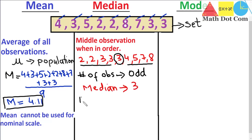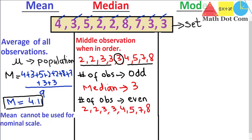If the number of observations is even, you need to find the average of the two middle observations. For example, if we remove one value from the data set, we have 3 observations on the left and 3 on the right, with 2 observations remaining in between. The average of those two middle values — 3 plus 4 equals 7, divided by 2 — gives 3.5. So the median in this case would be 3.5.